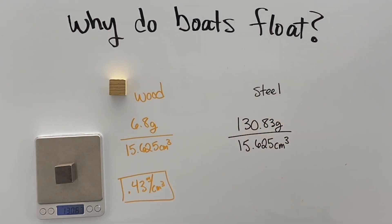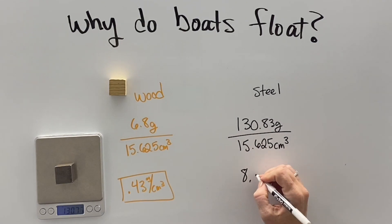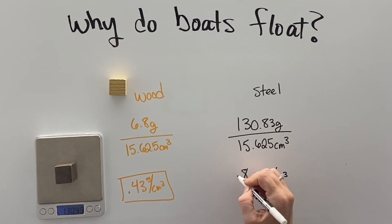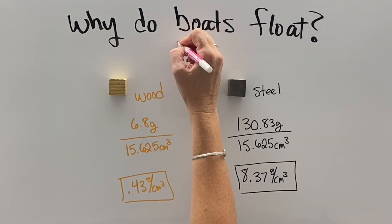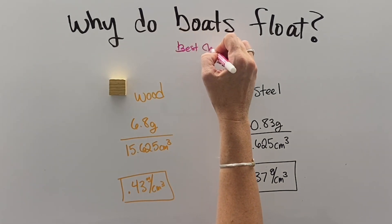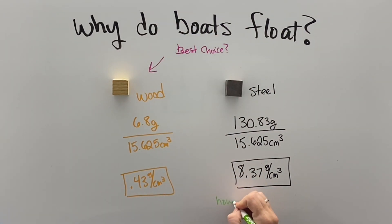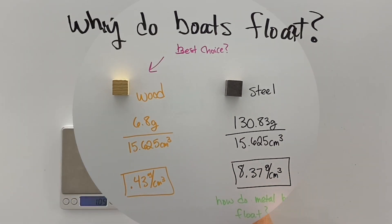Steel, on the other hand, seems like a strange choice to make a boat out of because it has a density of 8.37. It's over eight times more dense than water, so your best choice is going to be wood. But then how do we make metal ships that float?